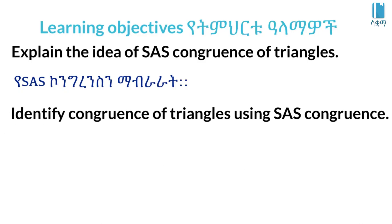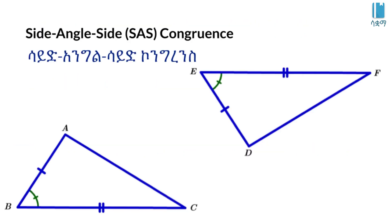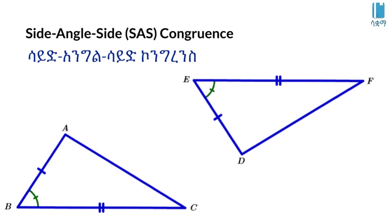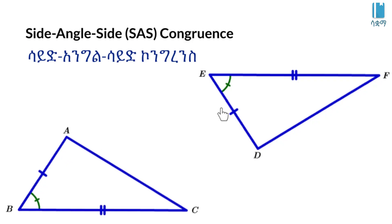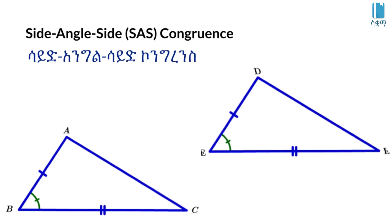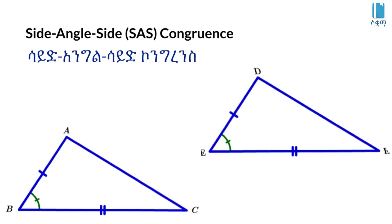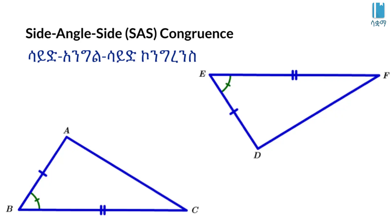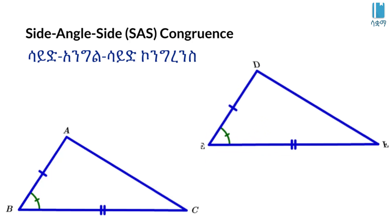Triangle congruence is established with the side angle side. The side of the angle transitions to a side of the angle. With side angle side, the corresponding parts are the same. The reason we aren't talking about this is that we don't have a concurrent case.